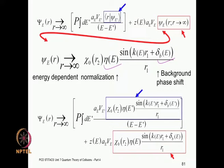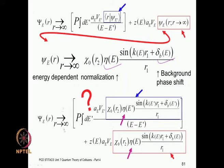One can work out this principal value integration in detail, as you would have done in mathematical physics courses. Rather than going through all those detailed mathematical steps, I will comment on the essential physics. Notice that eta(E) is an energy-dependent normalization — it is a function of energy — and the same eta function appears at a different energy argument. These two are essentially the same functions of energy. Our question is how to determine this principal value integral, which is what I will now discuss.